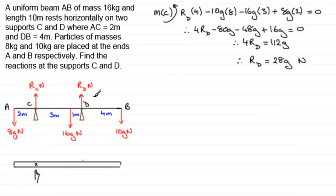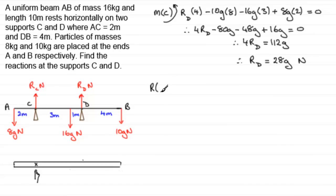Now we've got the reaction at D, we still need the reaction at C. I could take moments about D and work out a similar equation. But I'm not going to do that because there's a quicker way. Once you've taken your moments equation, we can resolve vertically. It doesn't matter whether you take up or down as positive — I'm going to take up as positive, purely because my unknown reaction is acting in the positive sense, so the term in my equation is positive.